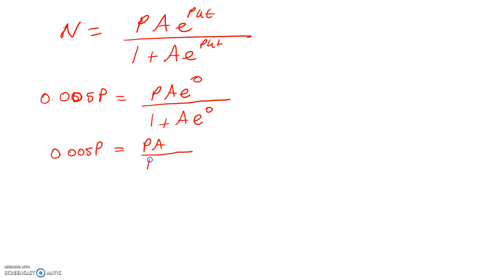Let's start with what we call the initial condition. We've got N equals this expression. Our goal at the end of this part is to have either A or K sorted out, and it's going to be A. When t is 0, N equals this, so that equals P times A times e to the power of 0 over 1 plus A times e to the power of 0. That gives us 0.005P equals PA over 1 plus A.